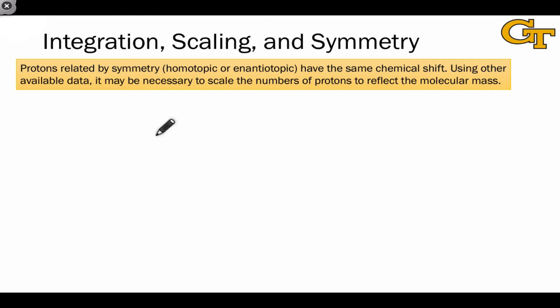And integration can be a little bit tricky because protons that are connected to completely different carbons that are related to one another by symmetry, that, put another way, share a homotopic or an antiotopic relationship, have the same chemical shift. And so we may need to scale the numbers of protons implied by the integration in order to reflect the overall molecular mass of the molecule, which we would need to get from another type of experiment, such as mass spectrometry.